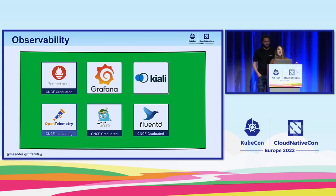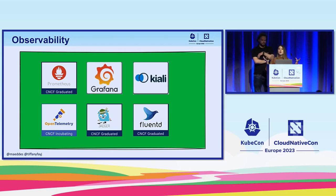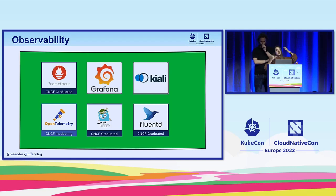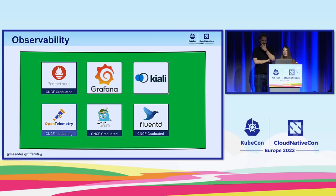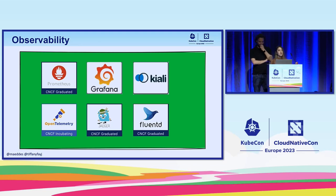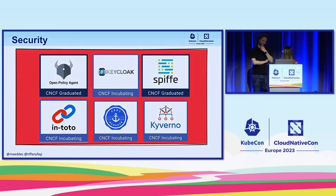For observability, many people have probably seen Prometheus and Grafana used together — Prometheus for metrics, Grafana for visualization. It can be chaotic to look at raw numbers in Prometheus, so Grafana lets you see trends and interact with the data. Then there's Kiali for observability on service meshes, which is relevant since we just mentioned service meshes. There's OpenTelemetry as a standard with integration layers for metrics and traces. There's also Jaeger for distributed tracing and FluentD for logging.